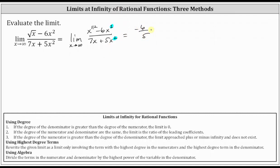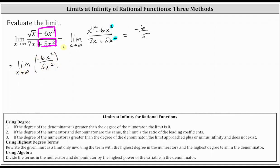The second method is to use only the term with the highest degree in the numerator and denominator to determine the limit. Going back to the original limit, the term with the highest power on x in the numerator is negative 6x squared, and in the denominator it is 5x squared. The idea is that negative 6x squared will outweigh the square root of x, and 5x squared will outweigh 7x, as x approaches infinity. Therefore the limit equals the limit of negative 6x squared divided by 5x squared as x approaches infinity. Simplifying, x squared divided by x squared is 1, giving us negative 6 fifths.